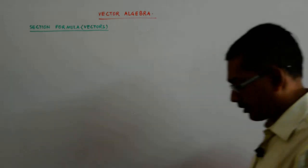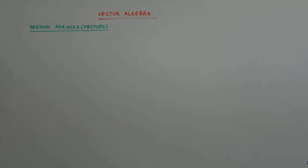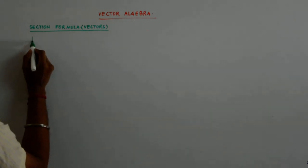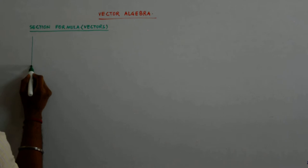Now, we come to the section formula for vectors. Till now what we had done was for the coordinate geometry, the concept remains the same.